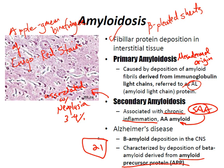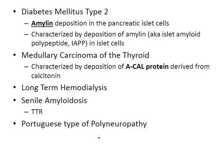In diabetes mellitus type 2, you have amyloid deposition in the pancreatic islet cells. This is characterized by deposition of amyloid — also known as islet amyloid polypeptide, or IAPP — in islet cells. Amyloid interferes with insulin sensing, thereby contributing to insulin resistance.